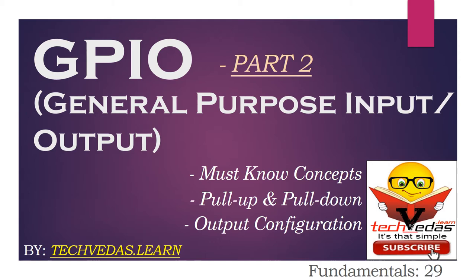In summary, in Part 1 we had discussed how GPIO looks inside your microcontroller, its input and output mode, and what is a floating or high impedance state, and how it can result in higher power consumption due to the leakage current. Now in this video, let's continue our discussion and try to understand what is the need of pull-up and pull-down resistors while making use of GPIO, and some of the most commonly used GPIO output configurations.